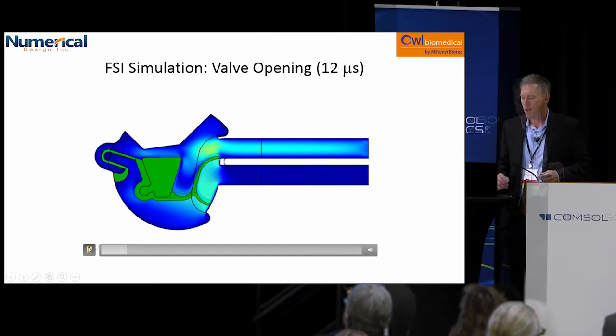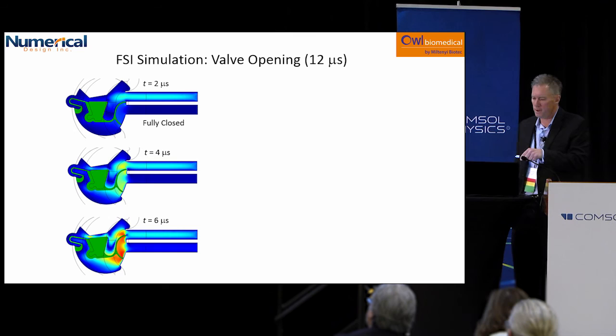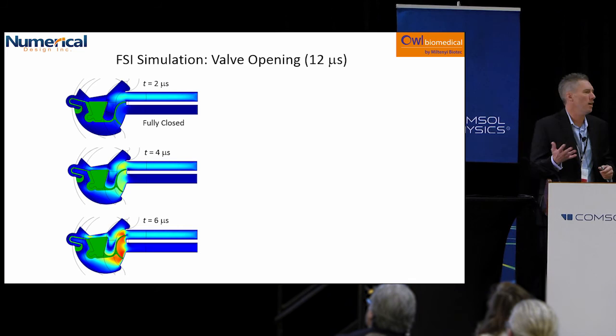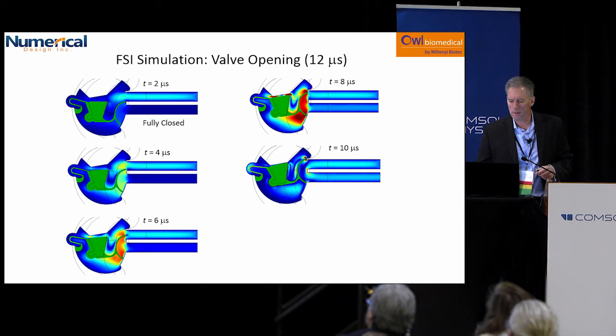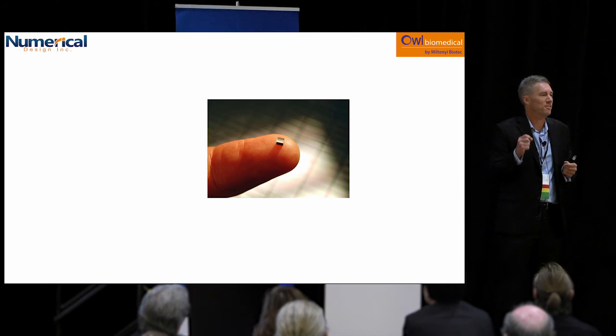The valve opens in about 12 microseconds. You can go in and identify the details of exactly what's going on during the opening. Now it's open, and there are maximum velocities during the opening of about five meters per second — very high speed. After it's fully open, you get the flow sorting going through. That's what the valve looks like — really cool, very small things that were unimaginable 10 to 20 years ago.